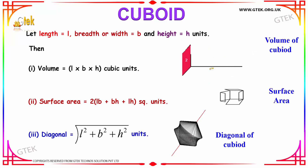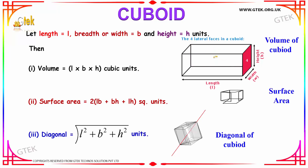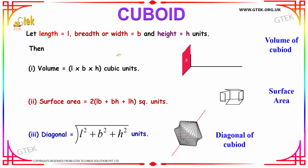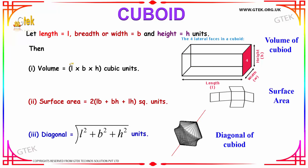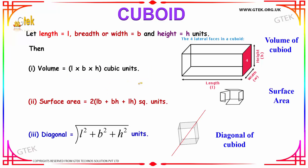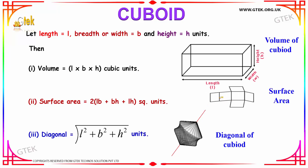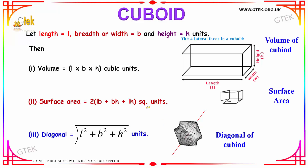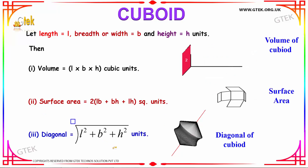Let us see the volume of a cuboid. A cuboid is nothing but the three-dimensional form of a rectangle. It has a length, a breadth, and a height, as you can see. The volume is the capacity of the cuboid, found using the formula L × B × H cubic units. The surface area of the cuboid is the area of six rectangles, calculated by the formula 2(LB + BH + LH) square units. The diagonal of a cuboid can be obtained using the formula √(L² + B² + H²) units.